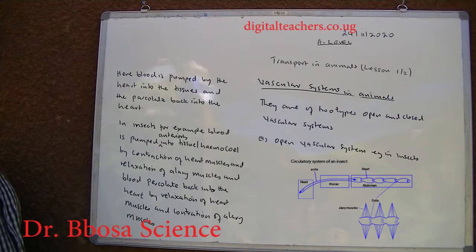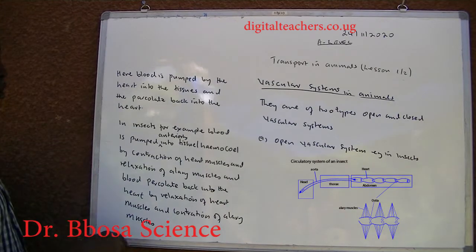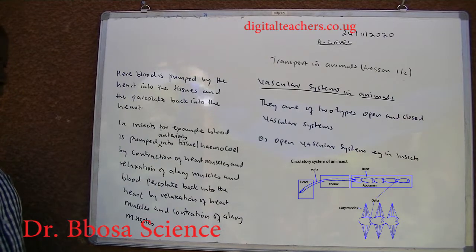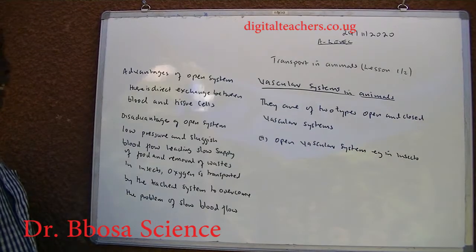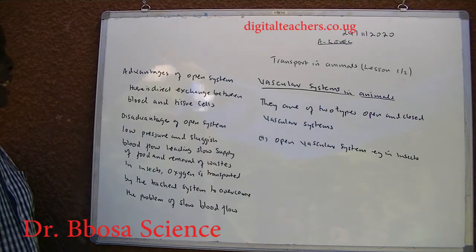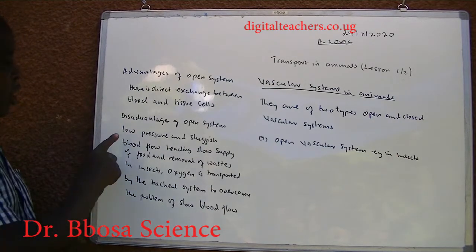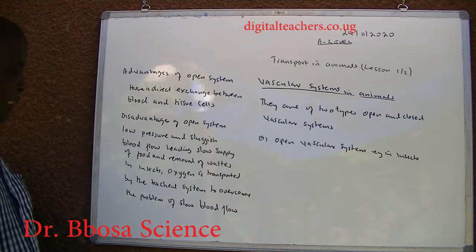In insects, blood is pumped anteriorly into the tissue or hemocoel by contraction of heart muscles and relaxation of artery muscles, and blood percolates back into the heart by relaxation of heart muscles and contraction of artery muscles. Advantages of open system: there is direct exchange between blood and tissue cells. Disadvantages: low pressure and sluggish blood flow leading to slow supply of food and removal of wastes.